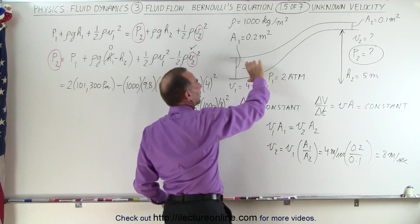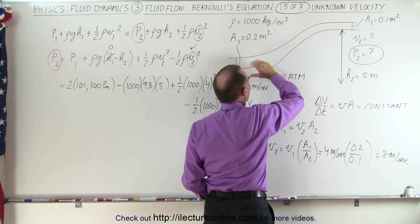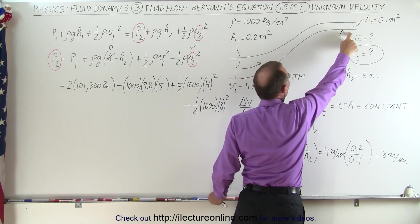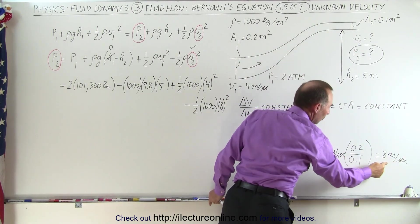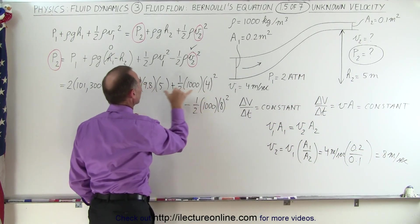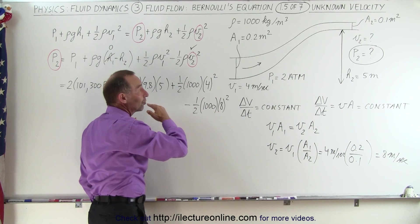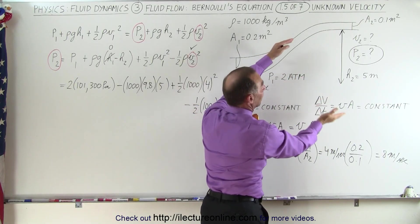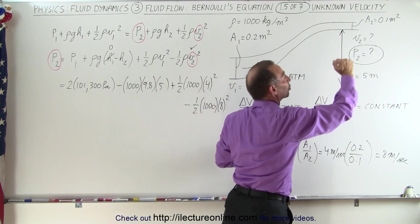Now if the pipe had become wider instead of narrower, then we would have a larger cross-sectional area, we would have a smaller velocity, and then the negative term would be smaller than the positive term. In other words, if the pipe became wider and the velocity dropped, then the pressure would go up.